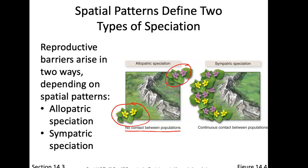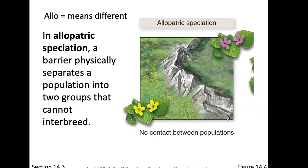Sympatric speciation seems to occur in populations that are seemingly very close together, but they somehow change, and this species will no longer reproduce with the other even though there is continuous contact between the two populations. Allopatric means they're in a different location — this picture shows all the yellows on one side of the mountain range and all the pink on the other, with no contact.